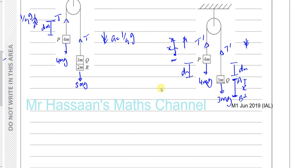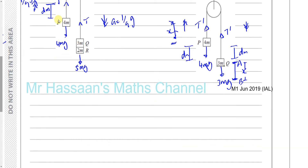We need to find what was the speed of this system at the point when R separated, and also the new acceleration, because we're going to use SUVAT to find that distance X. S will be our X, U will be the speed that the system was moving at the point when R separated, V would be zero, and A would be the new acceleration — it won't be G/9 because it's a new situation.